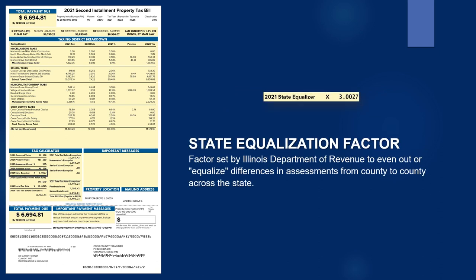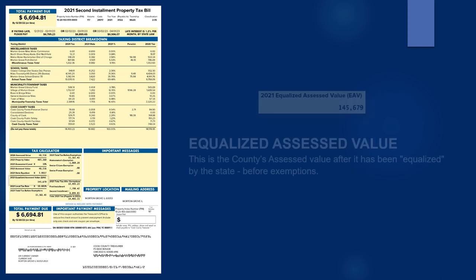The state equalization factor is set by the Illinois Department of Revenue to even out differences in assessments from county to county across the state. The equalized assessed value is the county's assessed value after it has been equalized by the state, before exemptions.